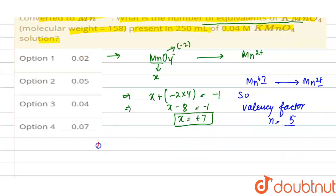calculate the number of equivalents of KMnO₄. Number of equivalents equals n (valency factor) × molarity × volume. The value of n is 5, molarity is 0.04 M, and volume is 250 mL. We will convert